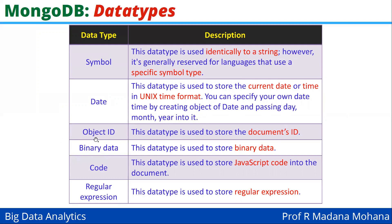The next data type is object ID. This data type is used to store the document's ID. The next data type is binary data, which is used to store binary data. The next data type is code, which is used to store JavaScript code into the document. Finally, regular expression is the next data type, used to store regular expressions.